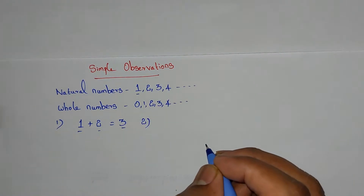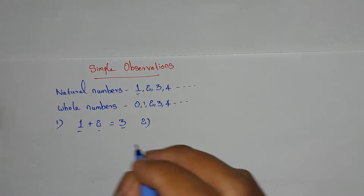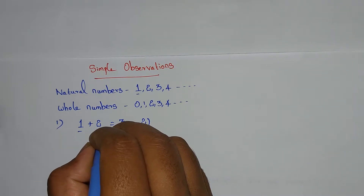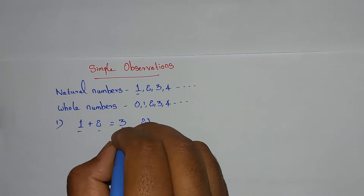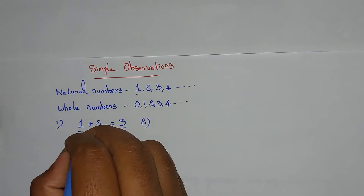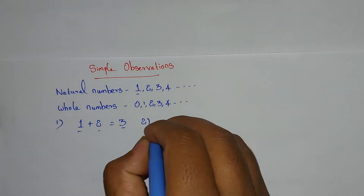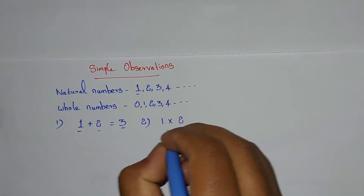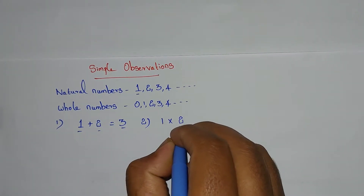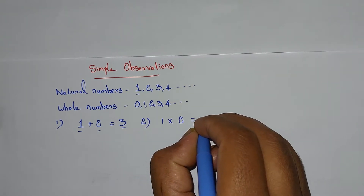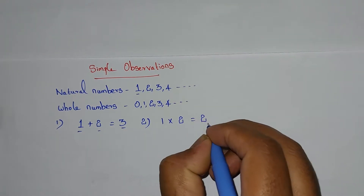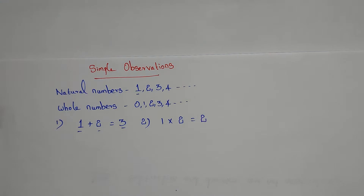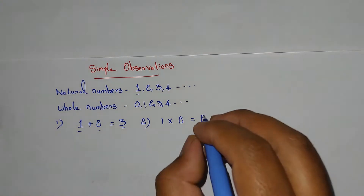Second observation: if we multiply any two natural numbers, we will get a natural number only. For example, 1 into 2 — 1 is a natural number and 2 is a natural number — and we get 2, which is a natural number.